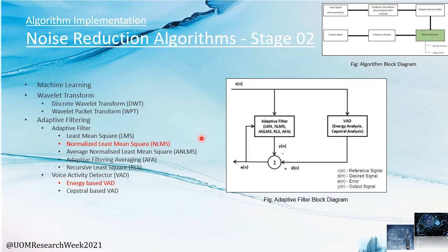In noise reduction stage two, we mainly considered three noise reduction algorithms: machine learning, wavelet transform, and adaptive filtering methods. After feasibility analysis, we chose to implement wavelet transformation and adaptive filtering methods. Under those main methods, we tested a series of different approaches. Considering the results obtained from objective and subjective metrics, we decided to use the NLMS adaptive filter method along with energy-based VAD. Here you can see the adaptive filter method that we implemented.